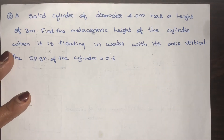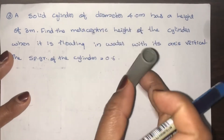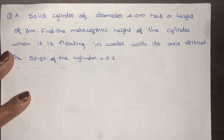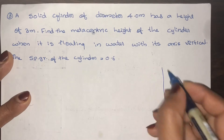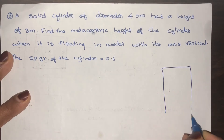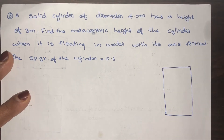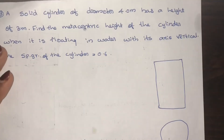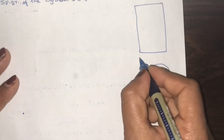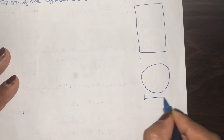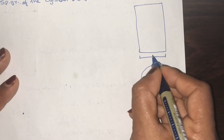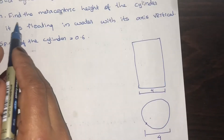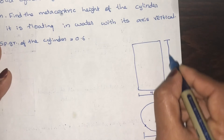The vertical height is the cylinder. The plan view has a circle, and the elevation has a rectangle. The diameter is 4 meter, so the width is 4 meter. The height of the cylinder is 3 meter.